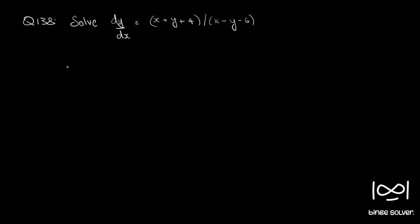We use the substitution — let's call the original equation 1 — and use the substitution: small x equals capital X plus h, and small y equals capital Y plus k. Let's call this equation 2.